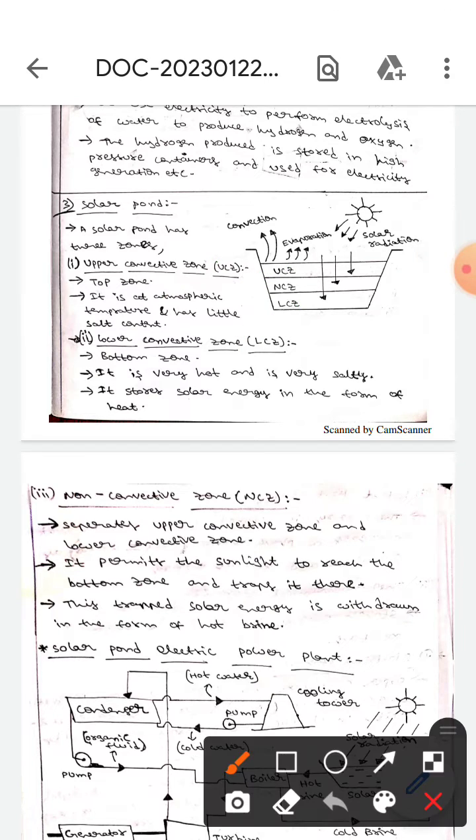Whereas the next one is lower convective zone. Here it is the bottom zone. It is very hot and is very salty. It stores solar energy in the form of heat.